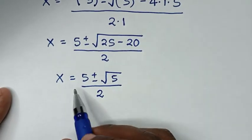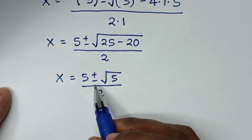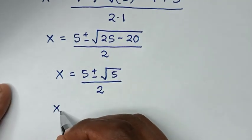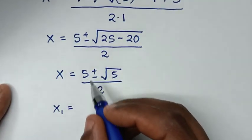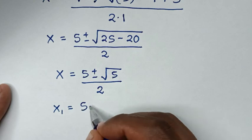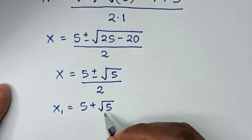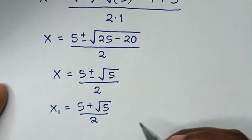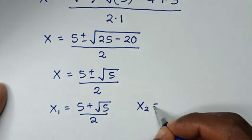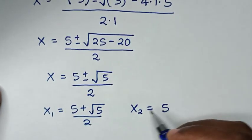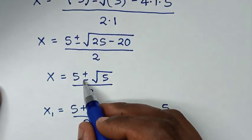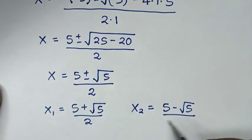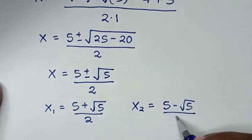Because of the plus or minus, we have two solutions. The first value is x₁ equals (5 plus square root of 5) over 2, and the second value is x₂ equals (5 minus square root of 5) over 2.